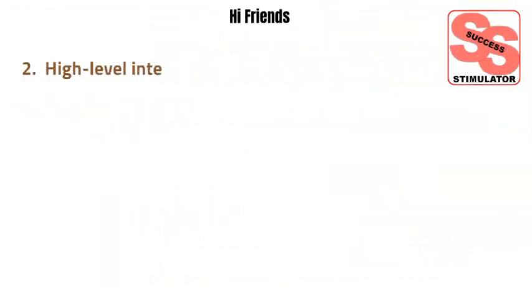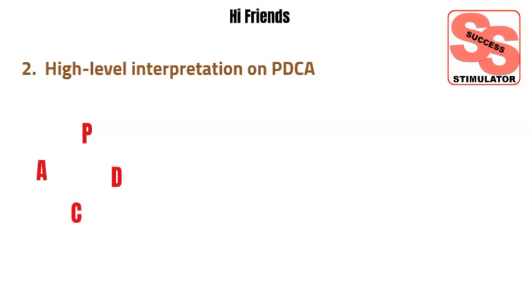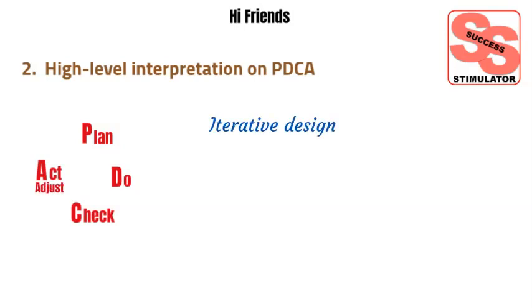Let's look at the high-level interpretation of PDCA. PDCA stands for Plan, Do, Check, and Act — sometimes called Plan, Do, Check, and Adjust. It is an iterative design and management method used in business for the control and continual improvement of processes and products.